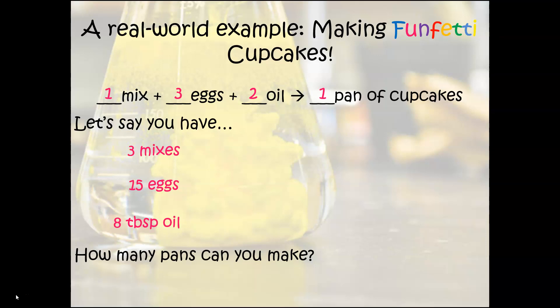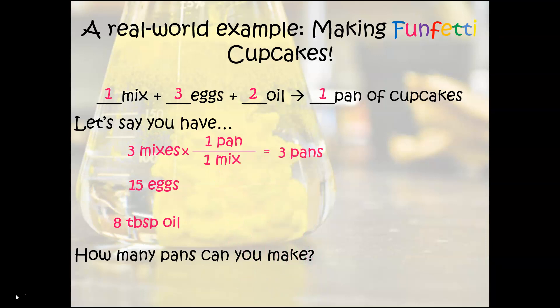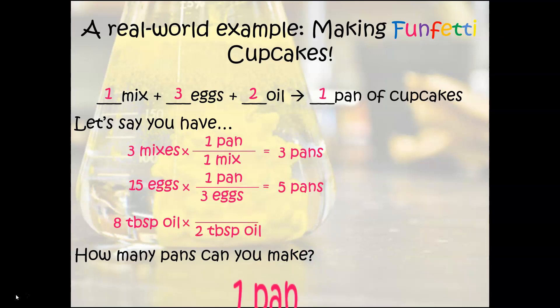Based on the mixes alone, the ratio is one box of mix to one pan, so from three boxes I get three pans. Based on the eggs, the ratio is three eggs to one pan, so from fifteen eggs I get five pans. Finally, for the oil, two tablespoons per pan gives me four pans from eight tablespoons.